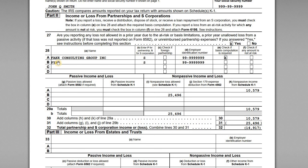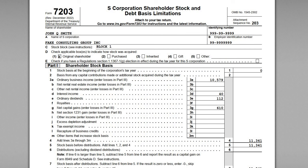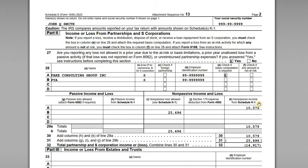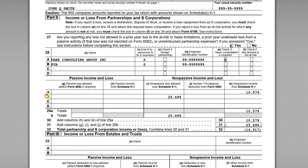The first entry on Schedule E line A is the name of the S corporation, Fake Consulting Group Inc., noted as an S corporation for federal tax purposes with the EIN. We are attaching the basis reconciliation, which is Form 7203. Because John actively participates in the business, this is a non-passive activity to him, so the $10,579 of income is reported as non-passive income in column K.